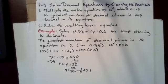So for example, we solve 0.38 plus 1.1y equals 0.6 by first clearing the decimals. The greatest number of decimal places in the equation is 2, in 0.38.